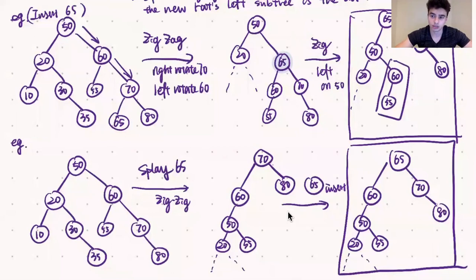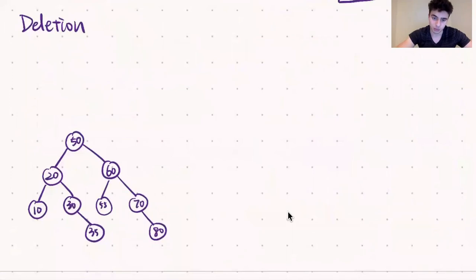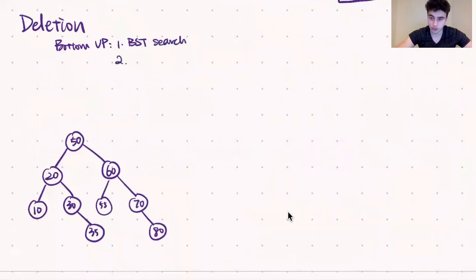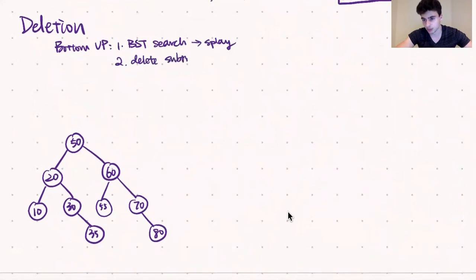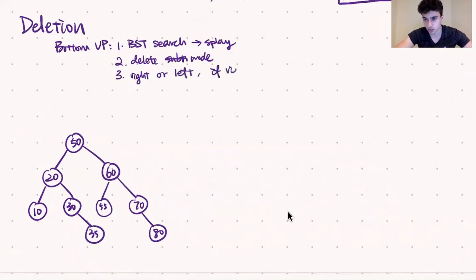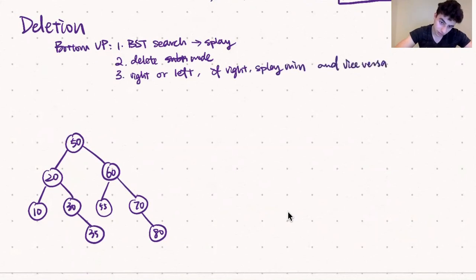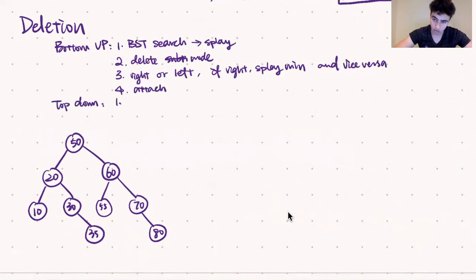Now let's discuss deletion in both cases. Deletion using bottom-up splay works similarly: we first perform a binary search tree search, then splay that node to the root of the tree. Once done, we delete the node and choose either the left or right subtree as our new root. If we choose the right subtree, we splay its minimum to the root and attach the left subtree as its left child. If we choose the left subtree, we splay its maximum to the root and attach the right subtree as its right child. For top-down splay, we splay the deleting node to the top and then use the same deletion procedure.